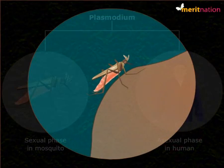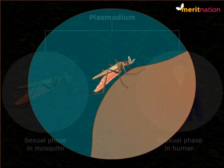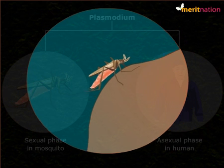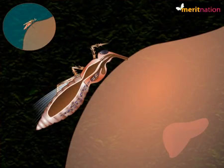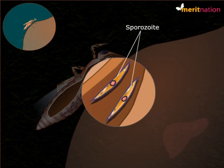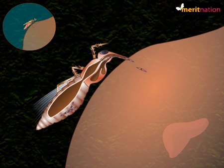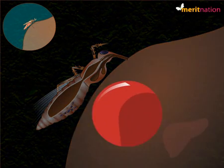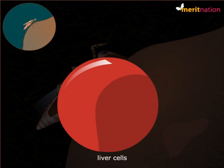When a female Anopheles mosquito bites a person to obtain a blood meal, it injects saliva mixed with an anticoagulant. If an infected female Anopheles mosquito bites a person, it injects the sporozoites of Plasmodium into that person. The sporozoites enter the bloodstream and travel to the liver cells.